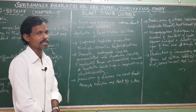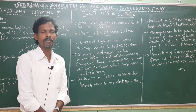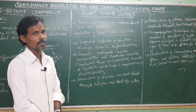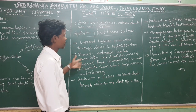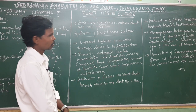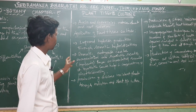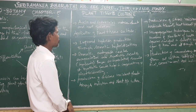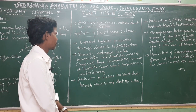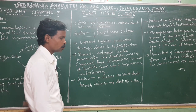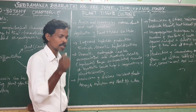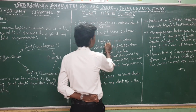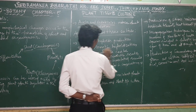You can ask 5 mark questions on this topic; it is rarely asked in 3 marks. There are about 6 points on applications. Through plant tissue culture, the first application is: improved hybrid production through the somatic hybridization technique.